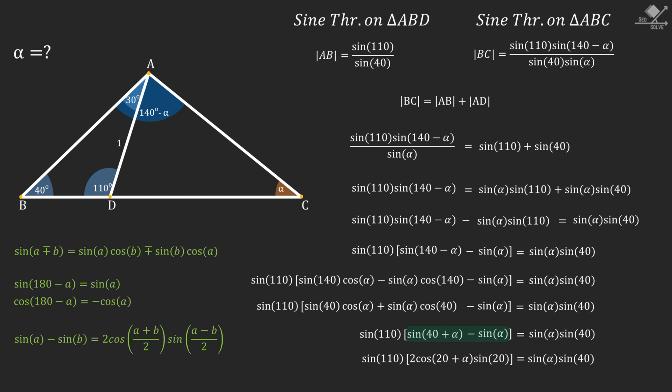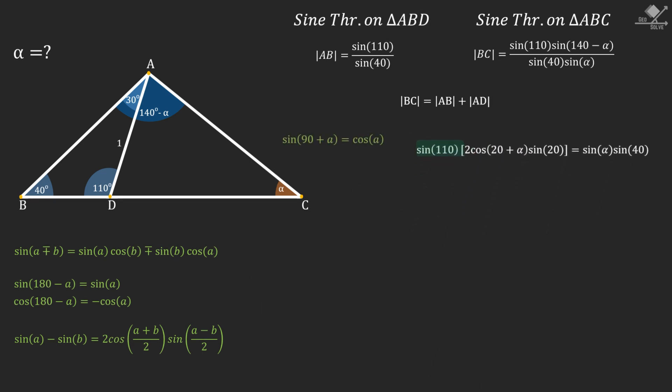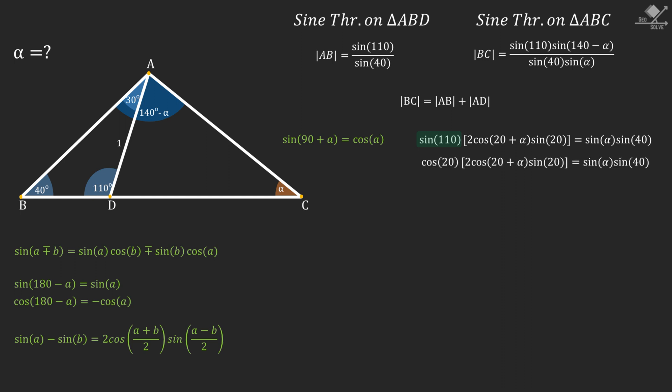Another identity we should remember is that sine of 90 plus A is equal to cosine A. In our case, we can write cosine 20 instead of sine 110. Also remember that sine 2A is equal to 2 times sine A times cosine A. Let's use it to expand the sine 40 term. Now we have this equation.